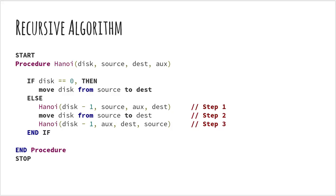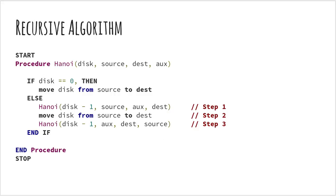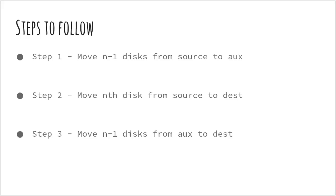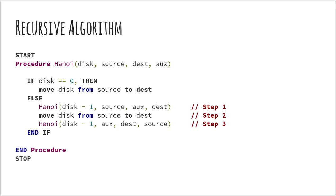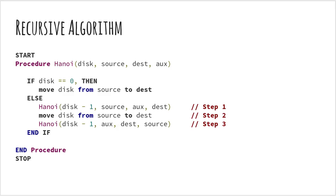This is essentially step 1 which we had seen before, which is moving n-1 disks from the source to the auxiliary peg. Then you move disk from source to dest. This is nothing but moving the largest disk from the source to the destination peg. Then you move back the n-1 disks from the auxiliary peg to the destination peg. This is nothing but step 3 which is move n-1 disks from the auxiliary peg to the destination peg. In this way you have solved Tower of Hanoi.